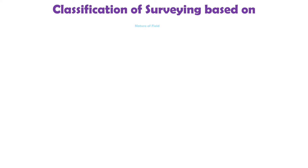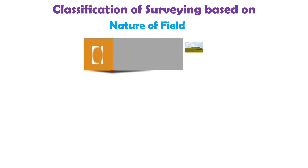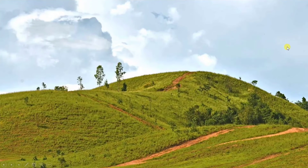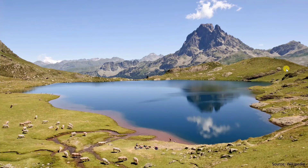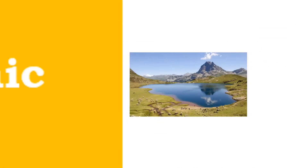Now let us see the classification of surveying based on the nature of field. The first is land survey. Land survey is done on land to prepare the plan and map of a given area. Topographic, city, and cadastral surveys are some examples of land survey. The next is hydrographic survey, which is conducted on or near water bodies like lakes, rivers, and coastal areas, and consists of locating the shorelines of water bodies.